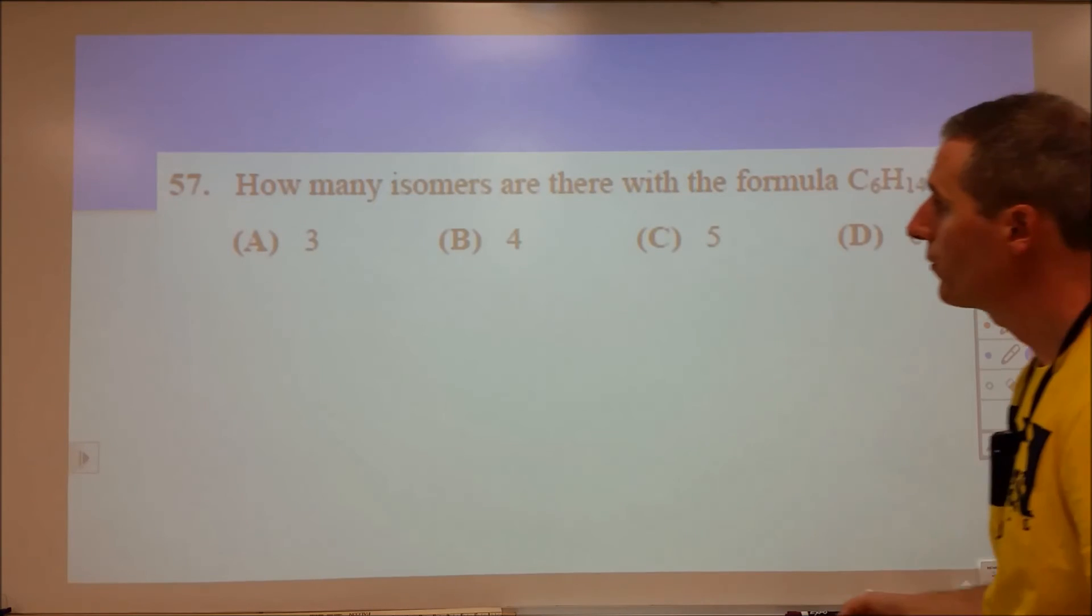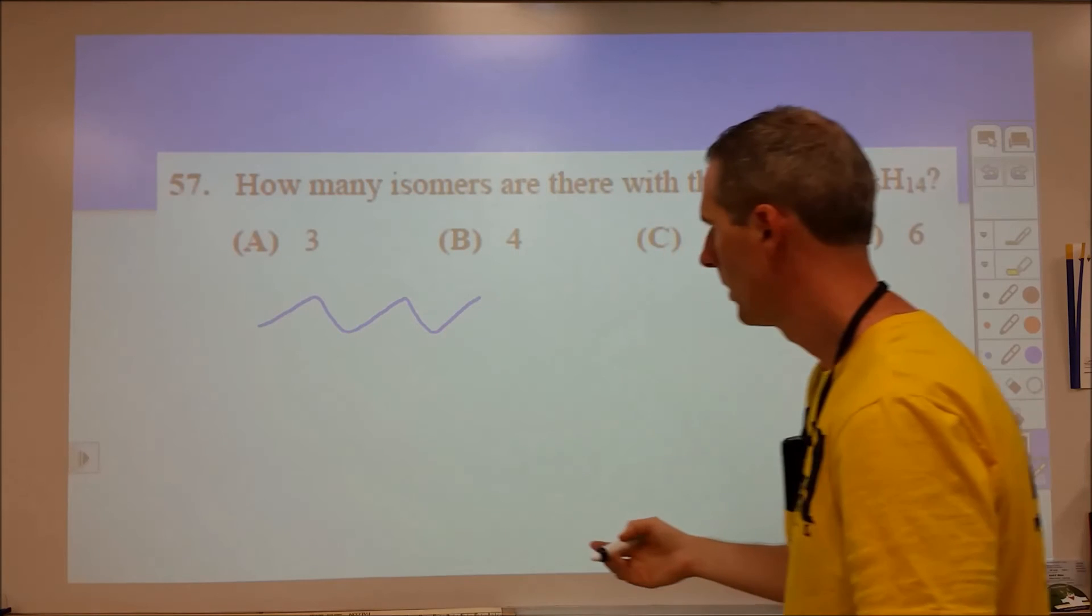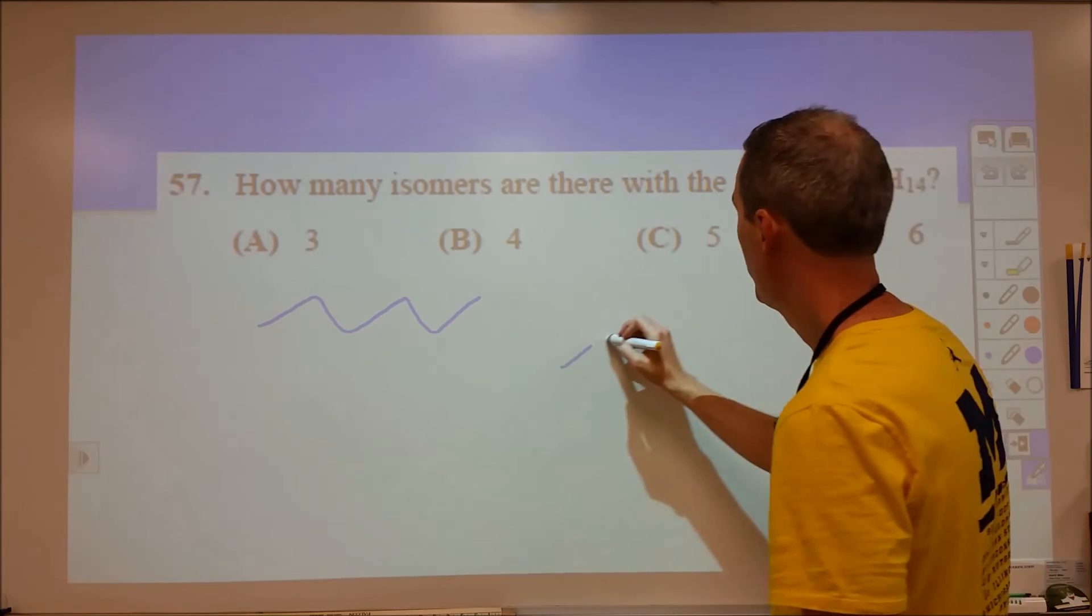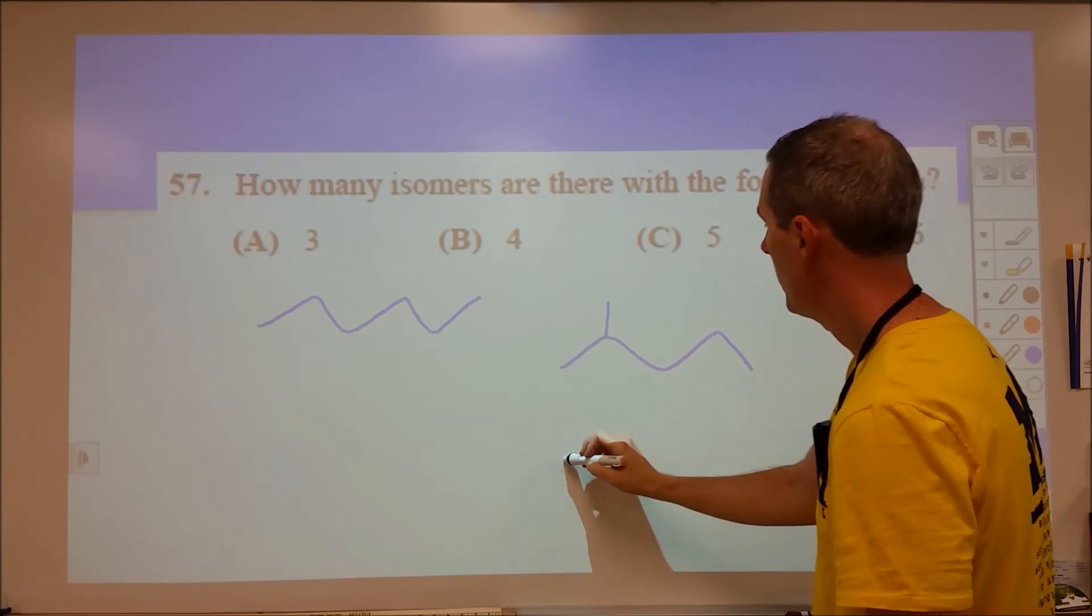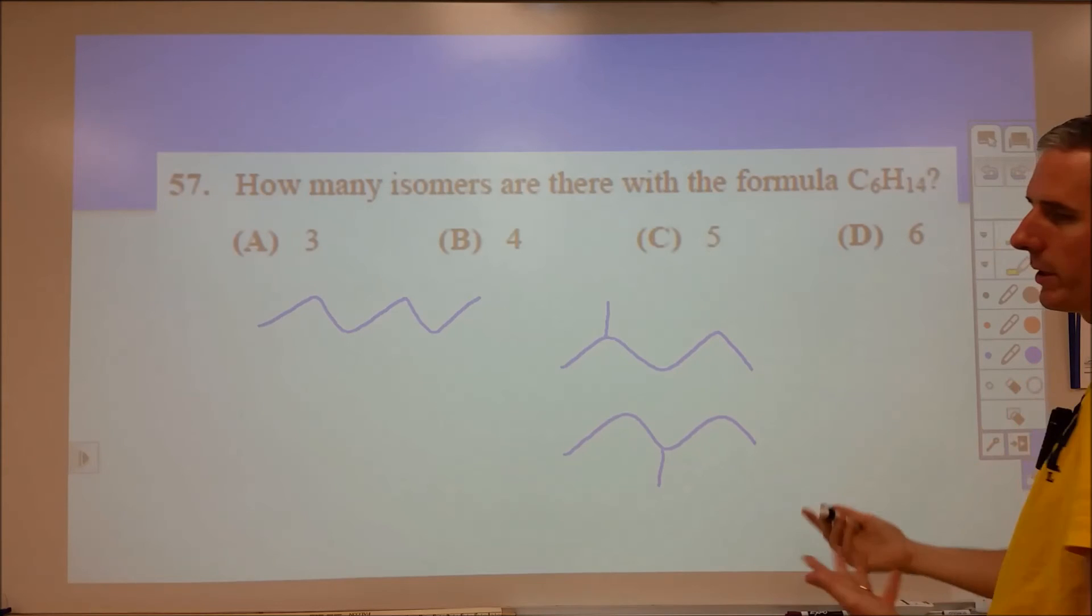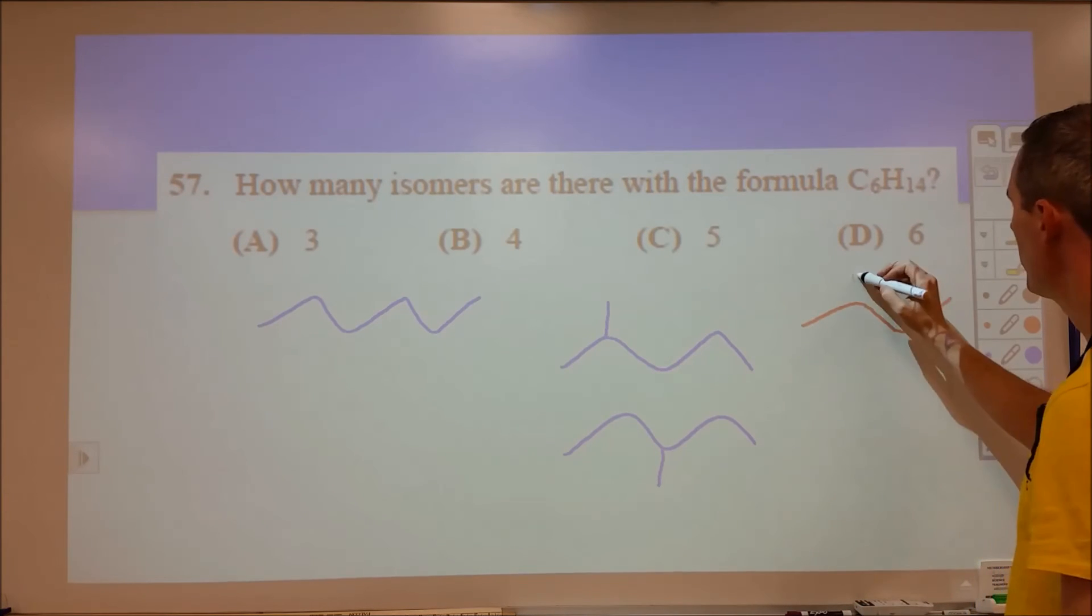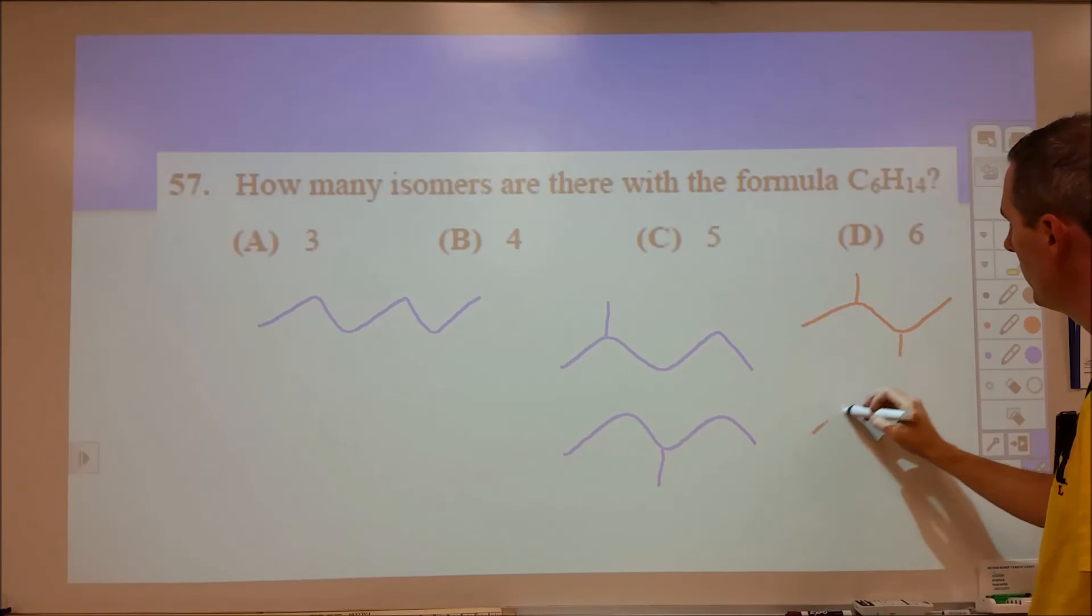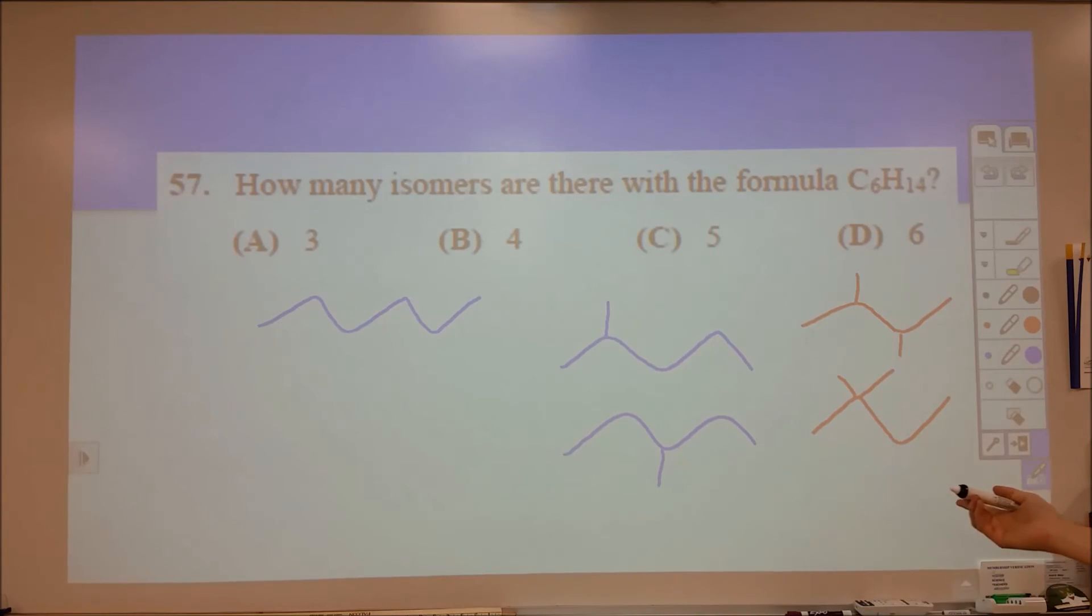And then C6H14, I'm going to go in skeletal structures here. So you have your hexane chain, that's one of your isomers. And then for five carbons, you can have 2-methylpentane, and you can have 3-methylpentane. You can't have four because that's 2-methylpentane. And then, if you have four carbons, you can have 2,3-dimethyl, or you can have 2,2-dimethyl. So there are five total isomers for C6H14.